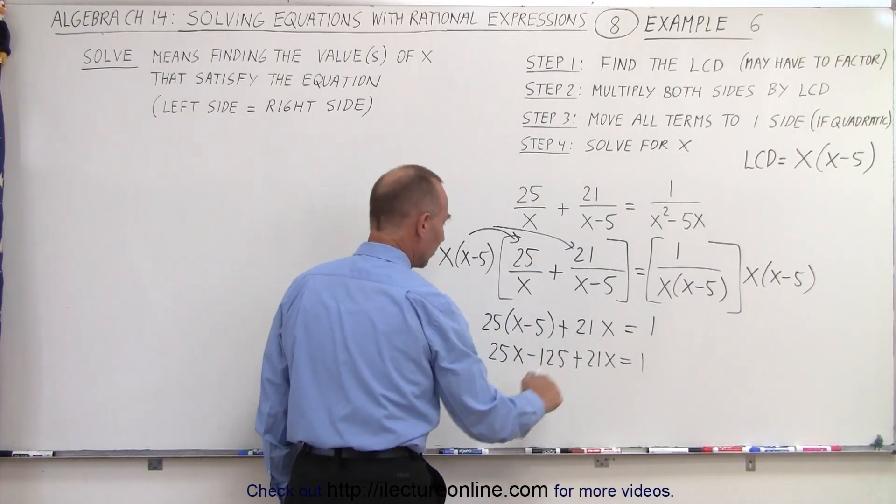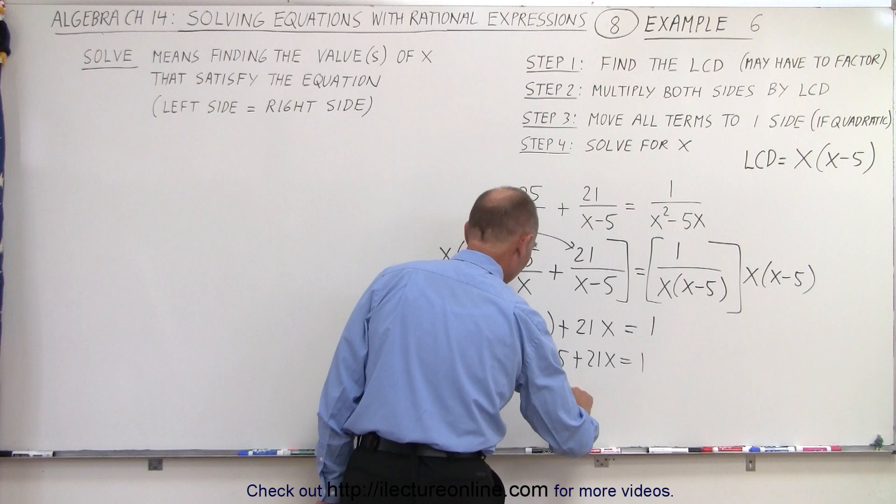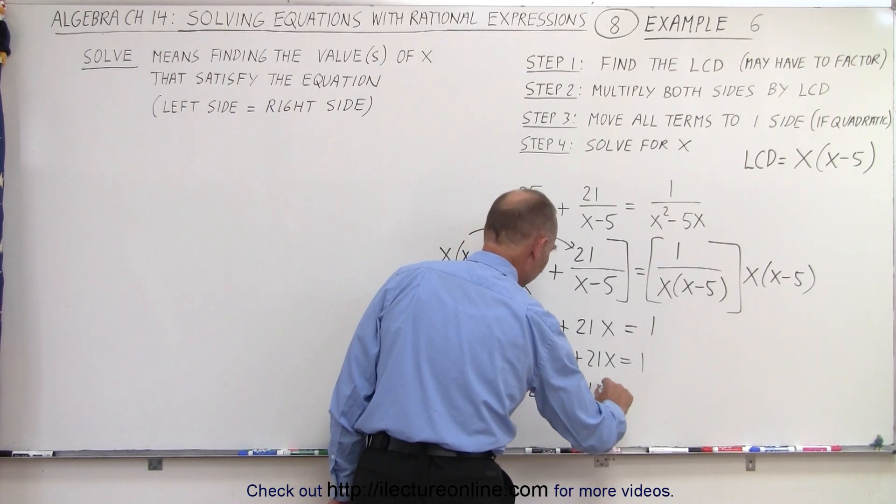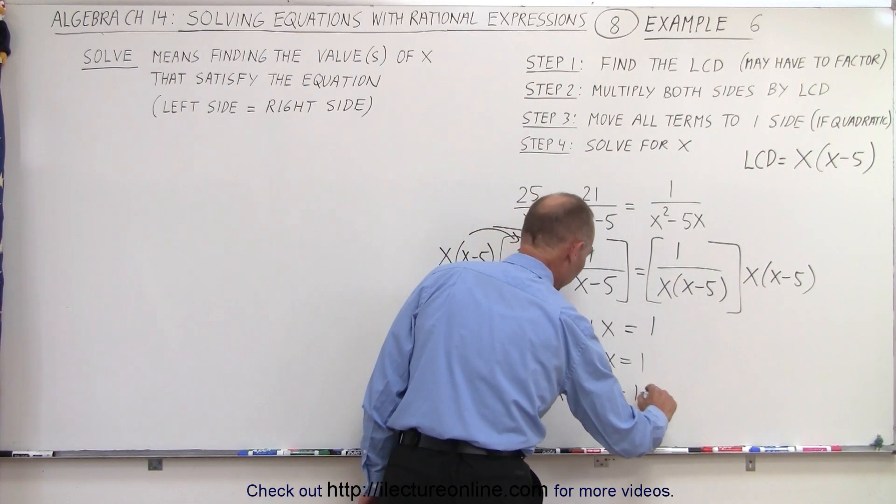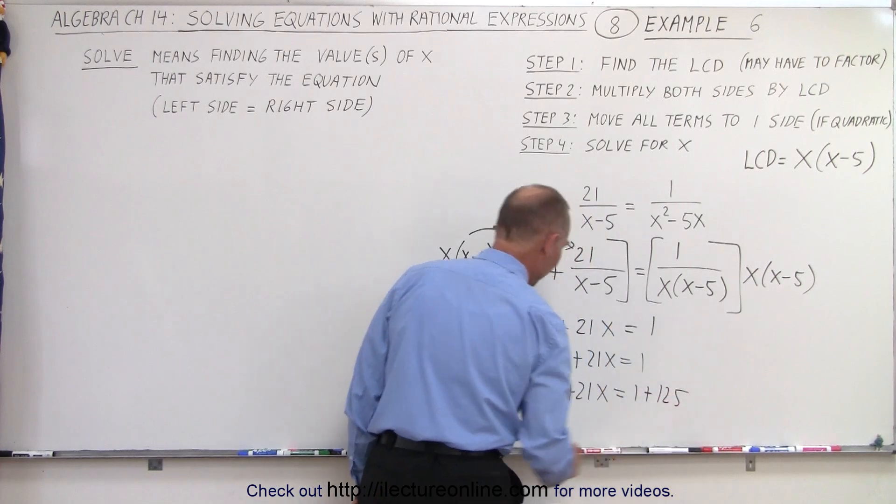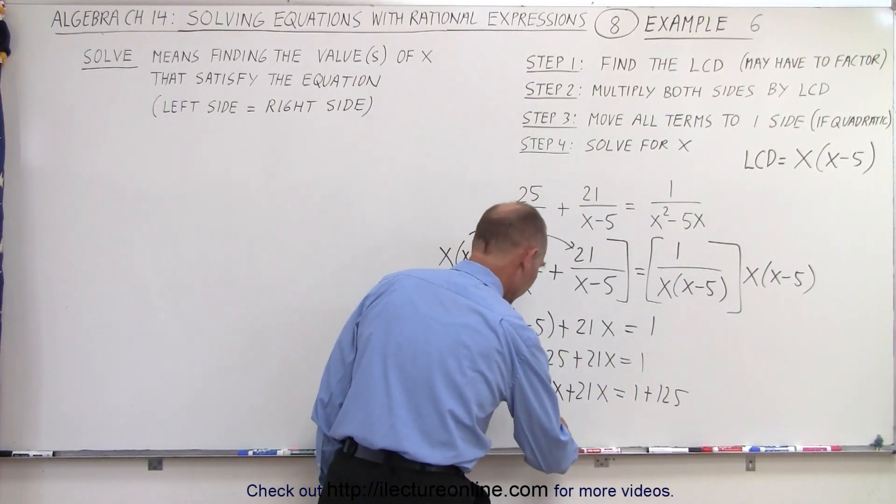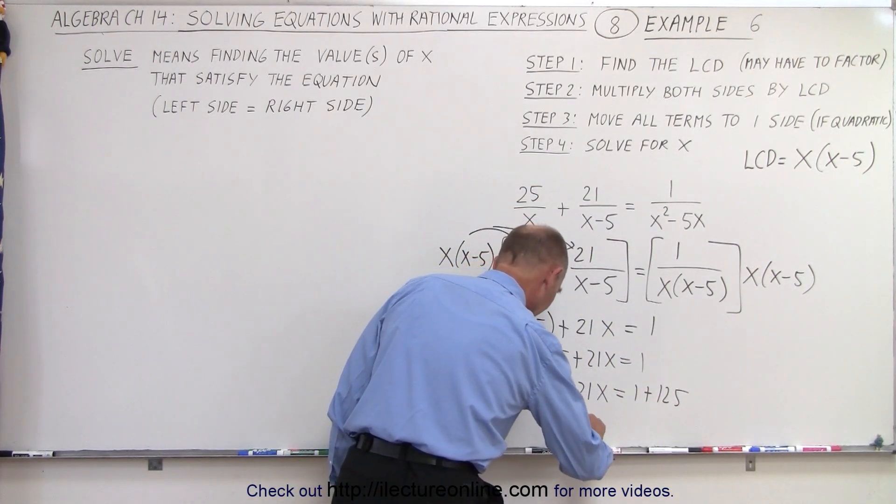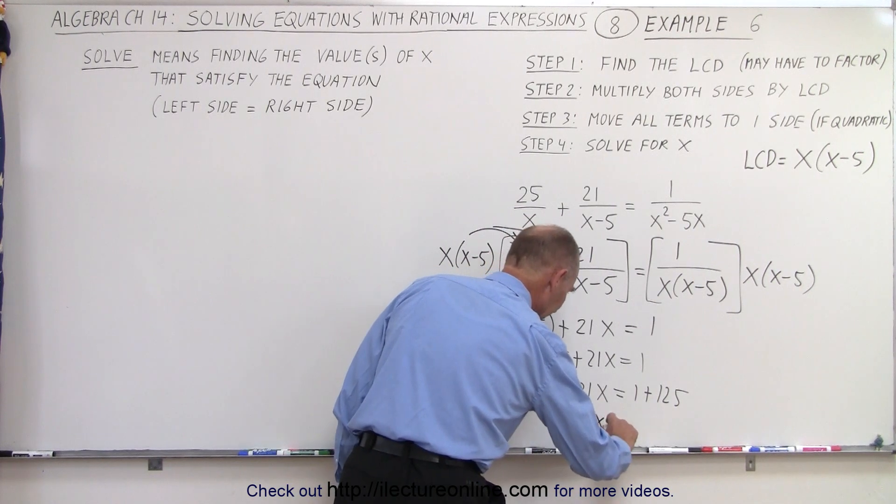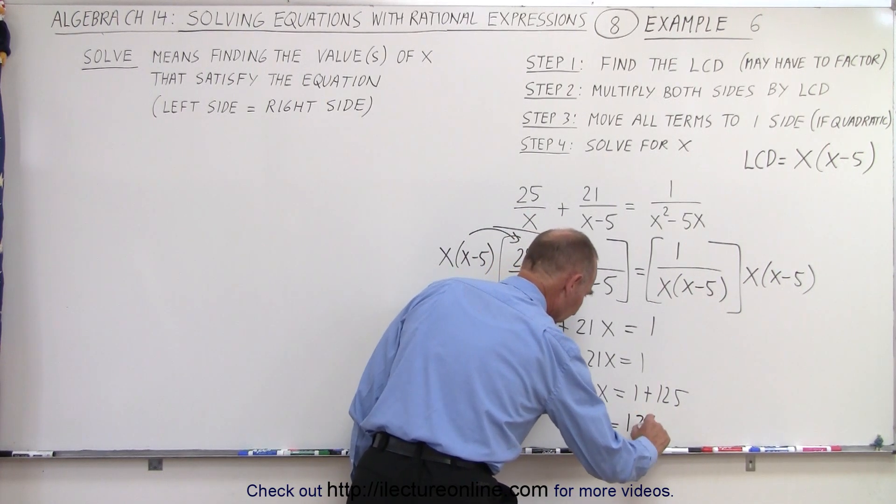Move the minus 125 over. We get 25x plus 21x is equal to 1 plus 125. Combining like terms, we get 25 plus 21 is 46x is equal to 126.